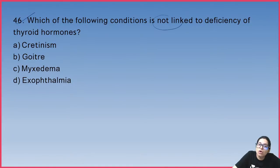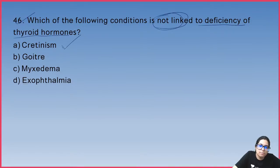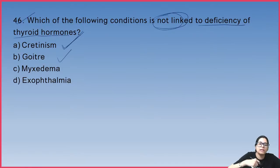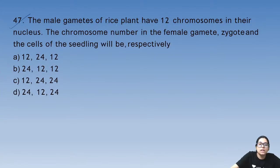Question 46: which condition is not linked to deficiency of thyroid hormone? Deficiency causes cretinism — babies born with low IQ, abnormal skin. Goiter involves swelling. Myxedema is also from deficiency. But exophthalmos (in goiter) is from hyperthyroidism, not deficiency.